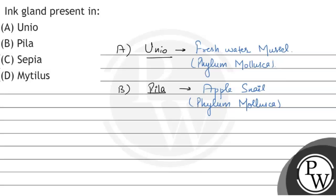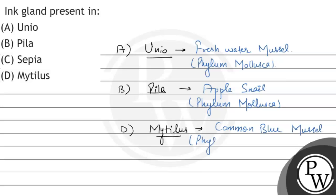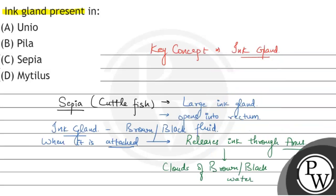We already saw option C, Sepia. Option D is Mytilus. Mytilus is also a mollusk and is known as the common blue mussel. It is also a member of phylum Mollusca. All four options are members of phylum Mollusca. We are asked about the ink gland, which is present in option C, Sepia. So the correct option is C, Sepia.